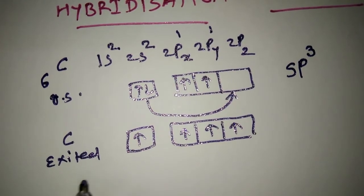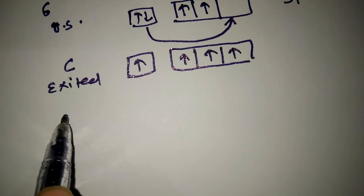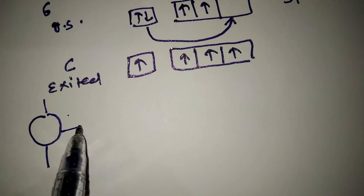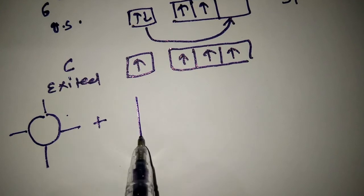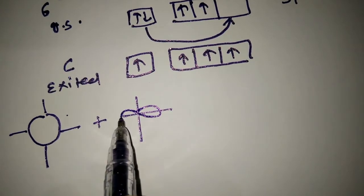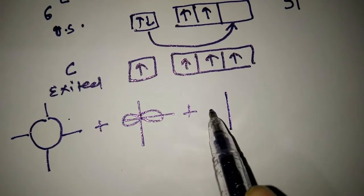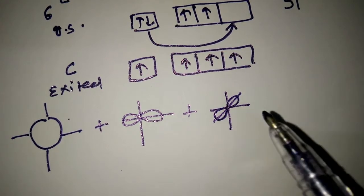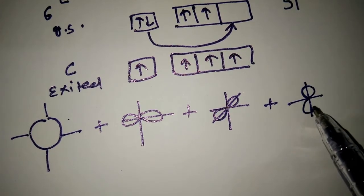Shape of hybrid orbitals: s orbital is spherical shape. This s orbital mixes with 2px, then to 2py, then to 2pz.